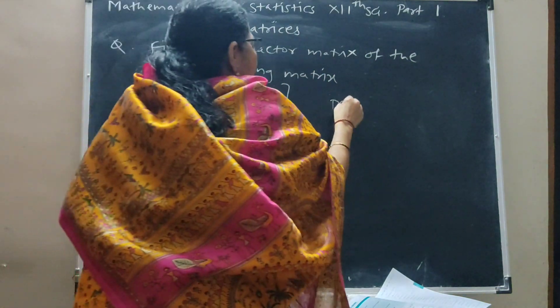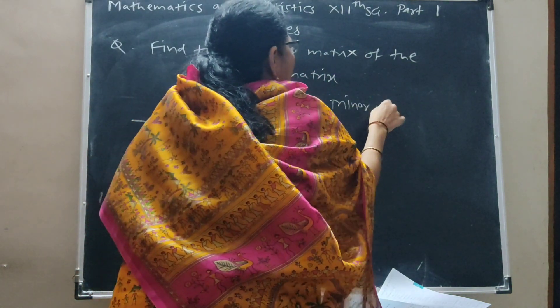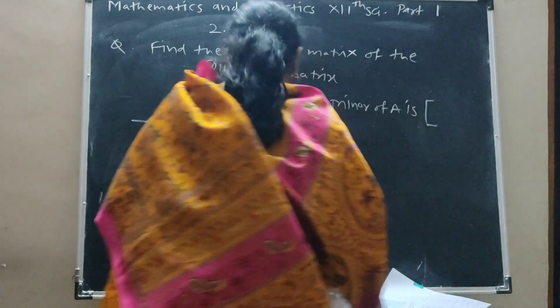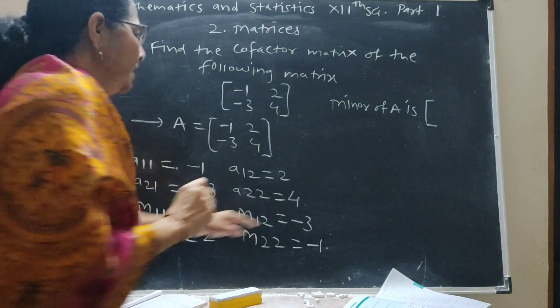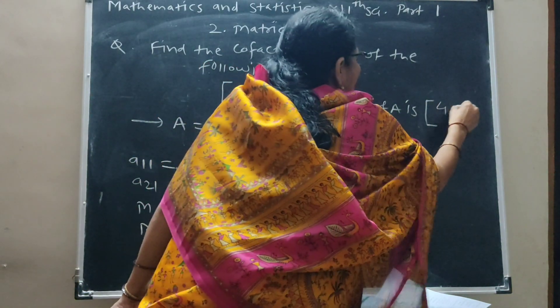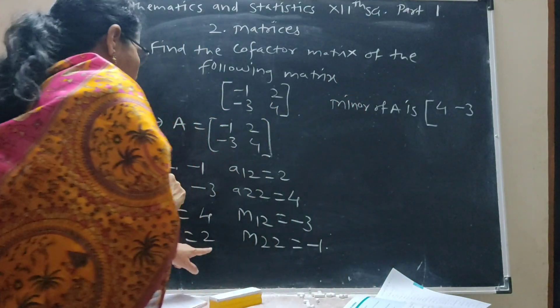Minor of A is the matrix 4, minus 2 in the first row, and 2, minus 1 in the second row.